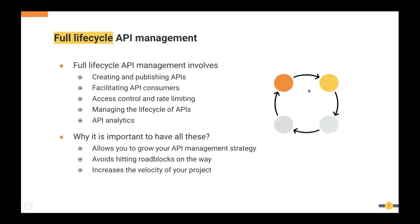If you make the wrong choice now and come across missing features in six months or a year, you'll hit a roadblock. You'll have to look for alternatives, migrate to another vendor, which involves cost and time and impacts your time to market. So be careful when selecting a vendor — ensure they support the capabilities aligned with your future API management strategy.